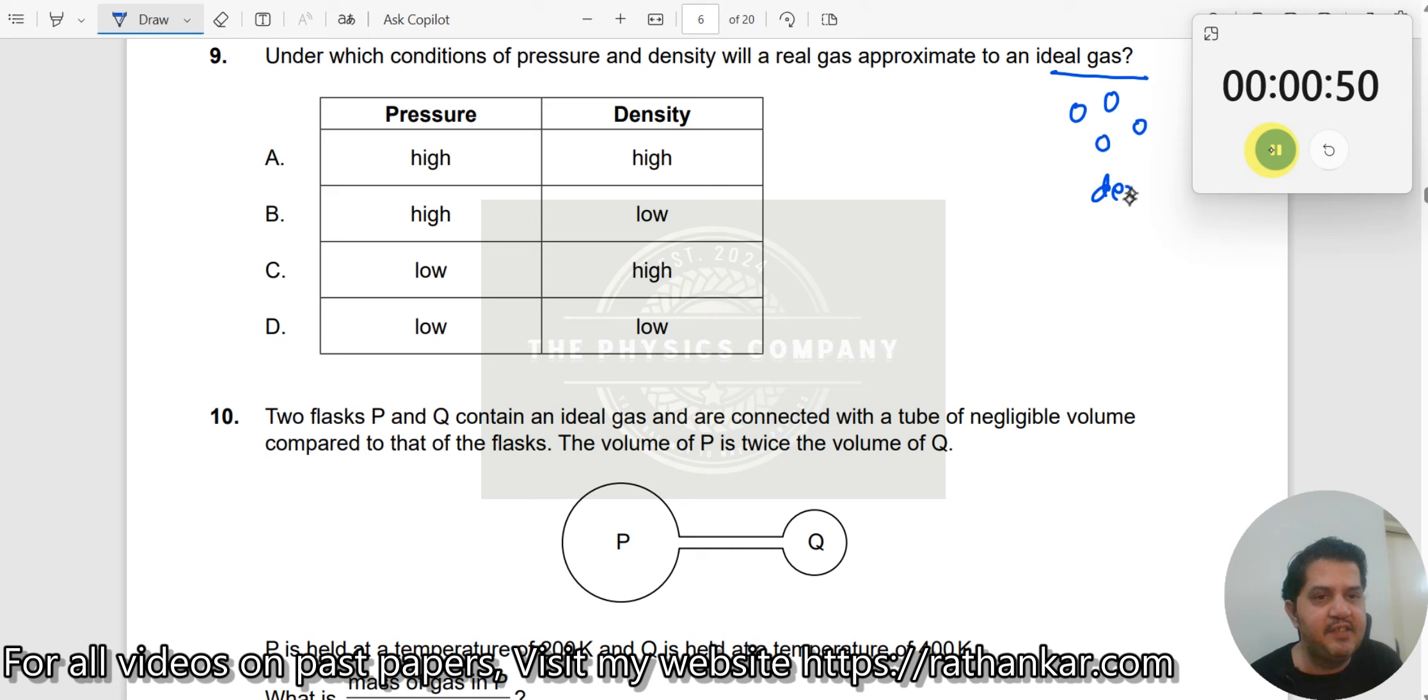Which means the density should be lower, right? If the density is higher, molecules will be packed together, which should not be the case. So density should be lower. These high density options are incorrect.